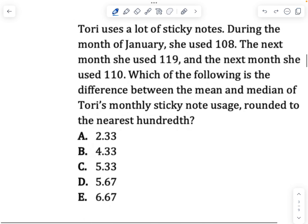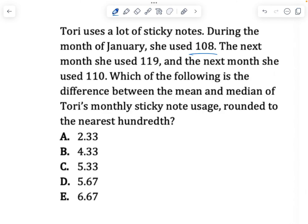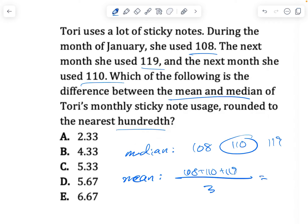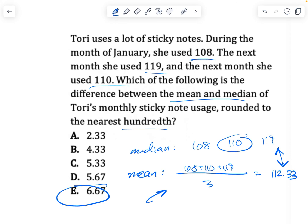Mean median mode. Tori uses a lot of sticky notes. During the month of January she used 108, the next month she used 119, and the next month she used 110. Which of the following is the difference between the mean and median of Tori's monthly sticky note usage rounded to the nearest hundredth? What's the median? We're going to order the numbers: 108, 110, 119. That's your median. Mean is going to be all of them added together divided by the number of numbers. 108 plus 110 plus 119 divided by 3. It's 112.33. The question is asking for the difference between them. Just do subtraction on your calculator. It's 6.67.